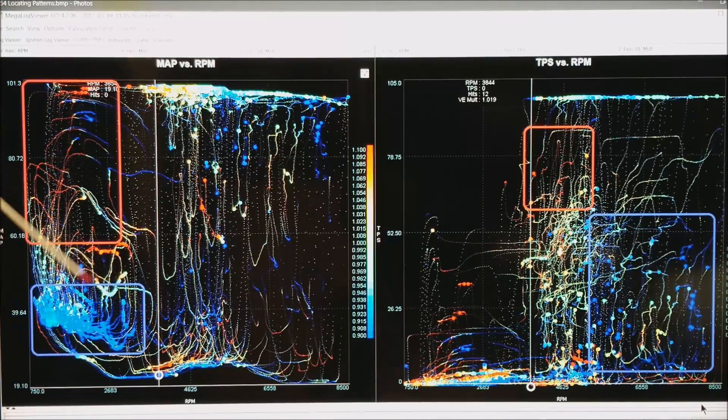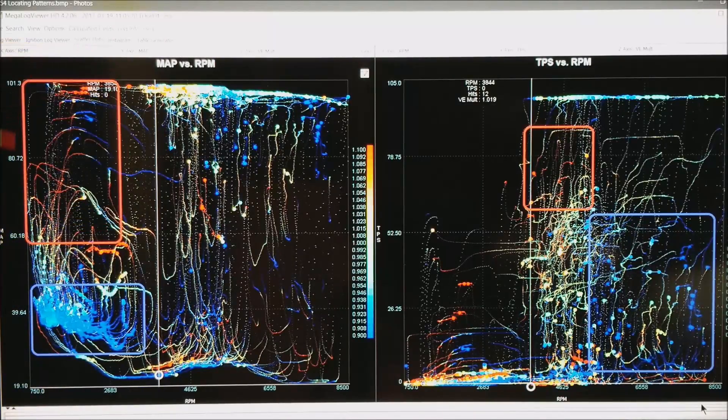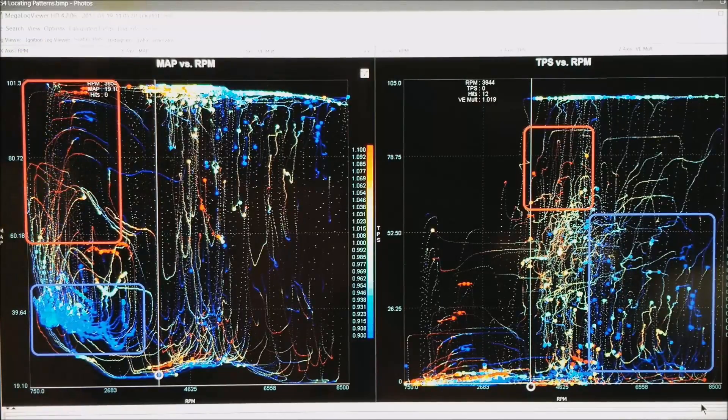Where this is the blue area, meaning we are rich, let us pull about 10% fuel. And let us add about 10% in this area. All I have done is highlighted where it is predominantly rich or lean.